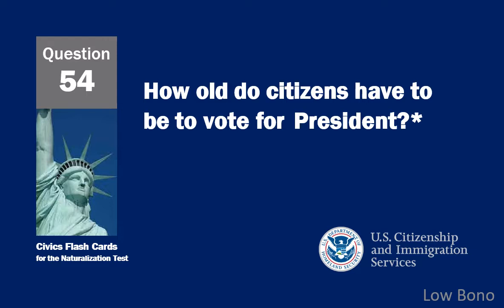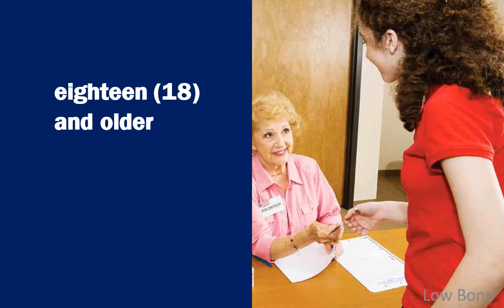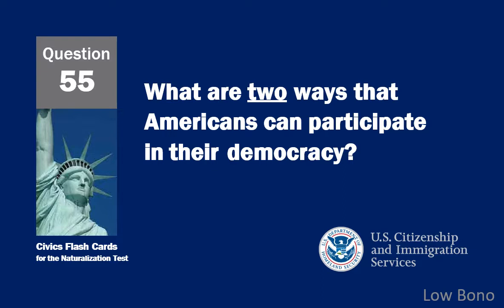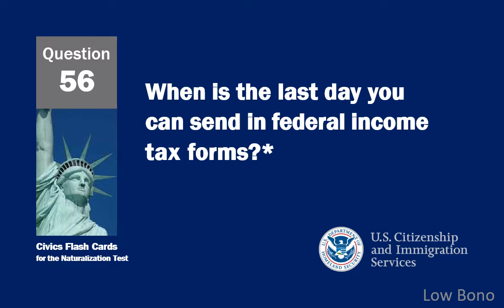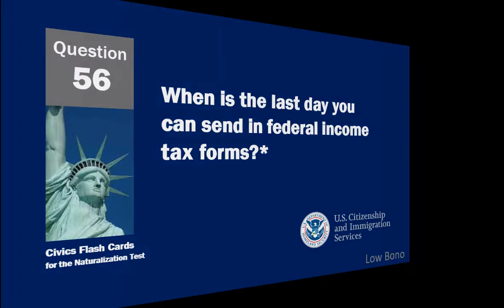How old do citizens have to be to vote for president? Eighteen and older. What are two ways that Americans can participate in their democracy? Vote and run for office. When is the last day you can send in federal income tax forms? April 15th.